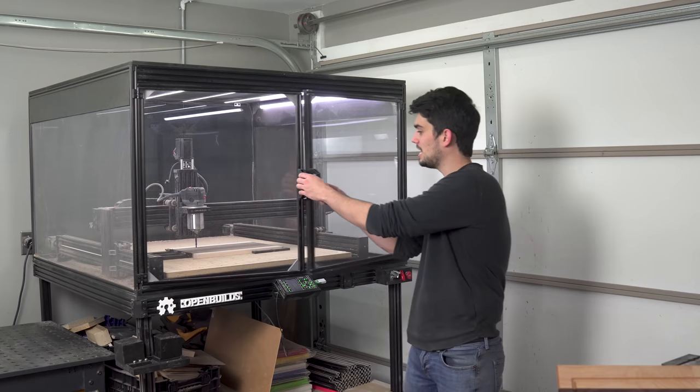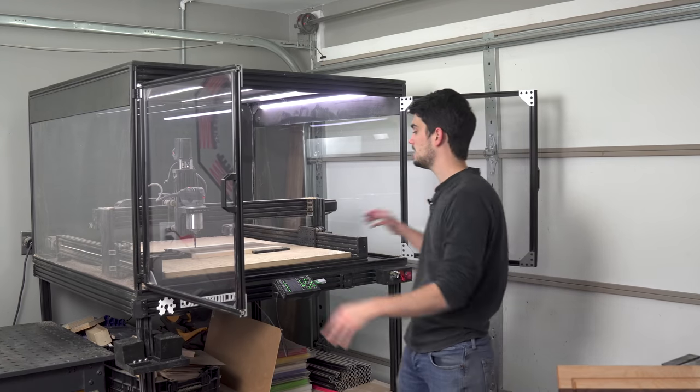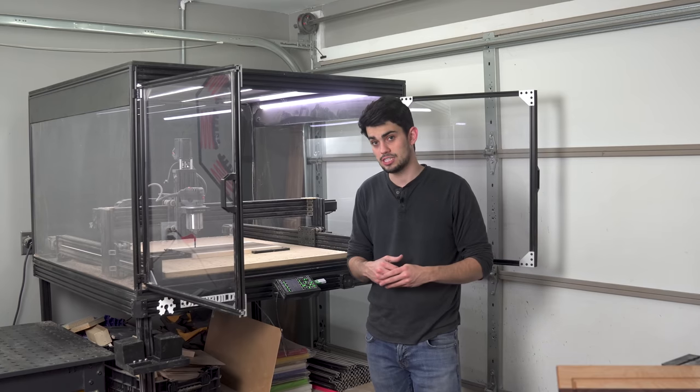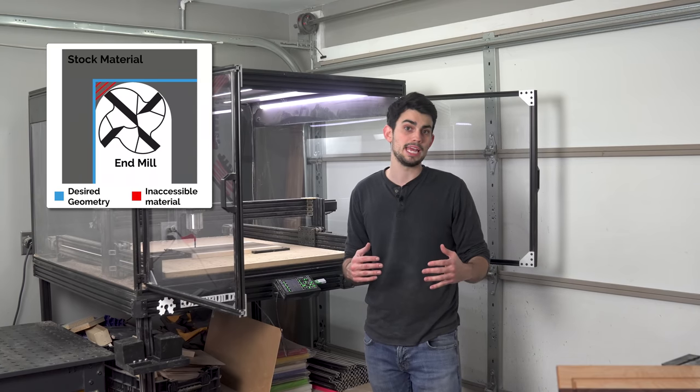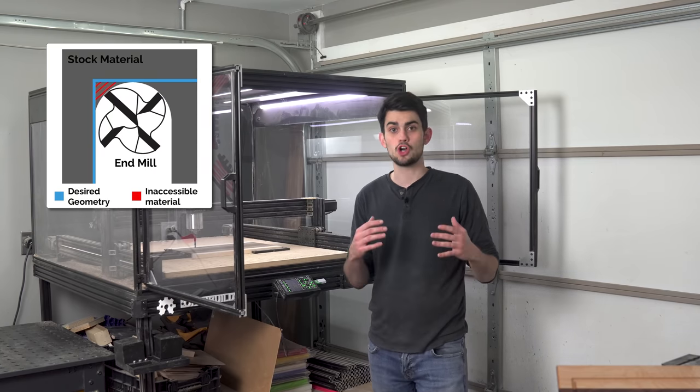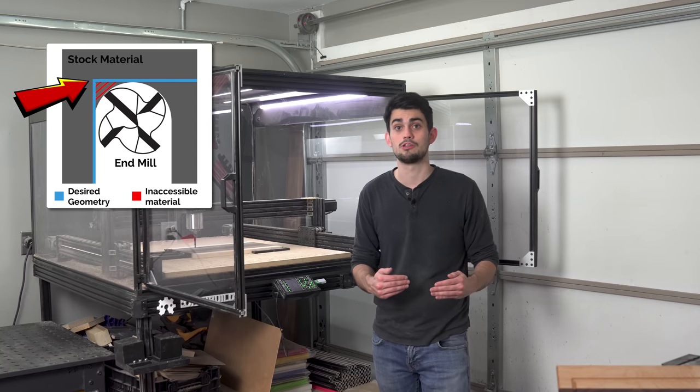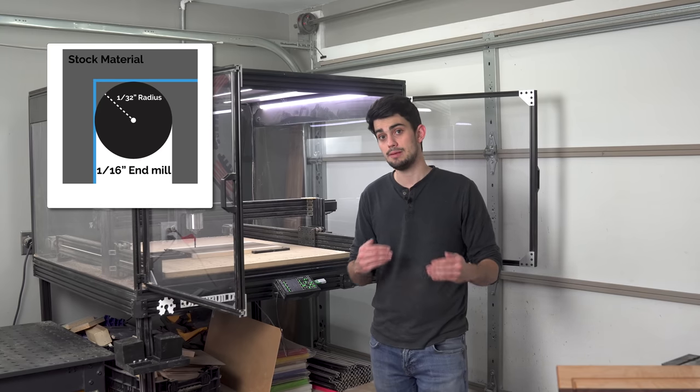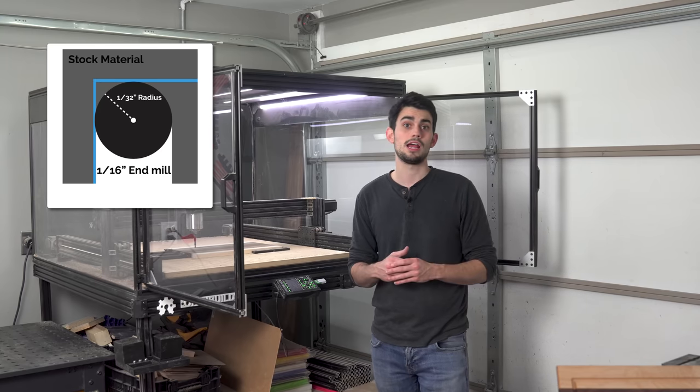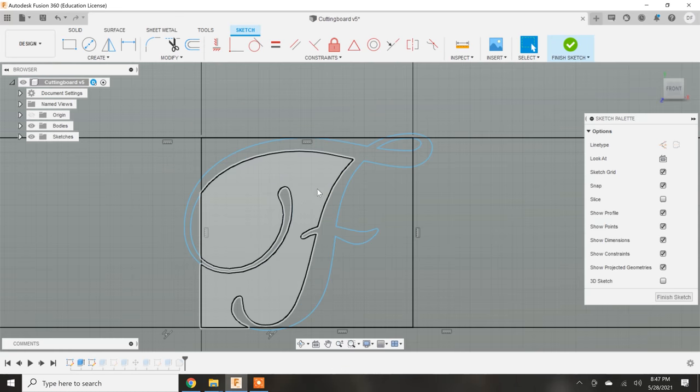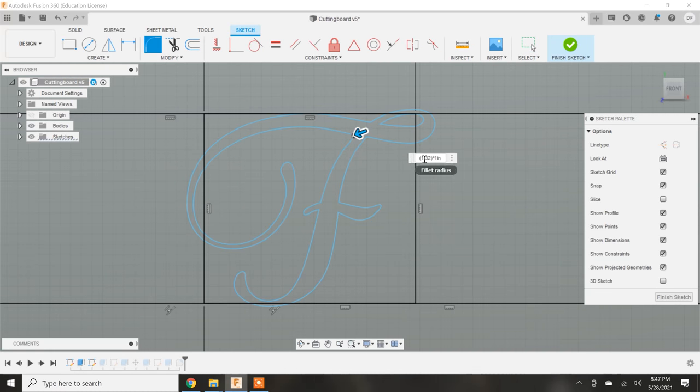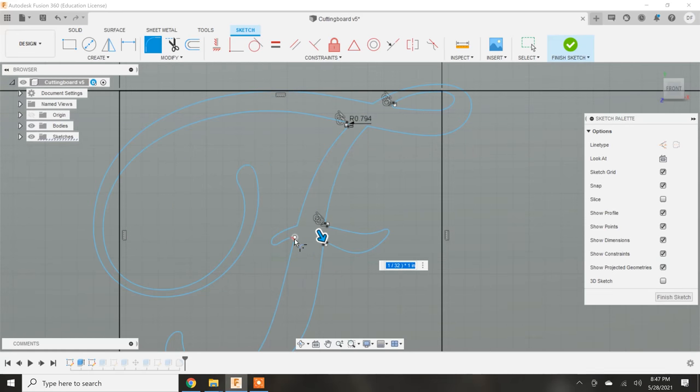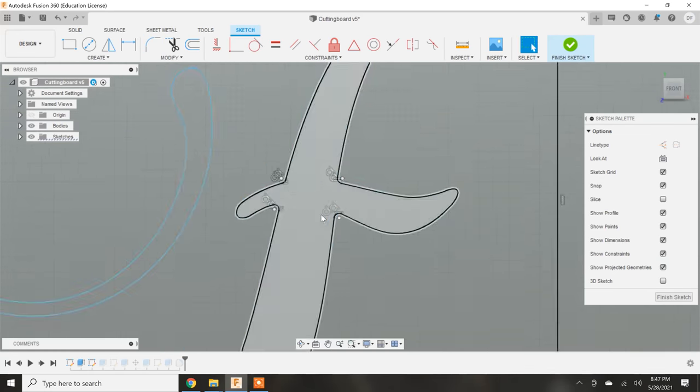With that all finished, next we need to make the pocket for the inlay. This will be in the shape of a cursive F. The trickiest part about inlays is that you must remember the sharpest point in your design can't be smaller than the radius of your end mill. I'm going to use a 1/16 inch end mill so my sharpest corner can only have a radius of 1/32nd of an inch. If you don't take this into consideration then your inlay may not fit or there won't be a seamless transition between the base material and the inlay.